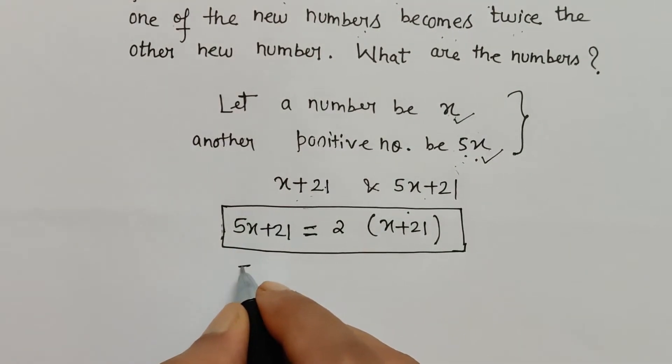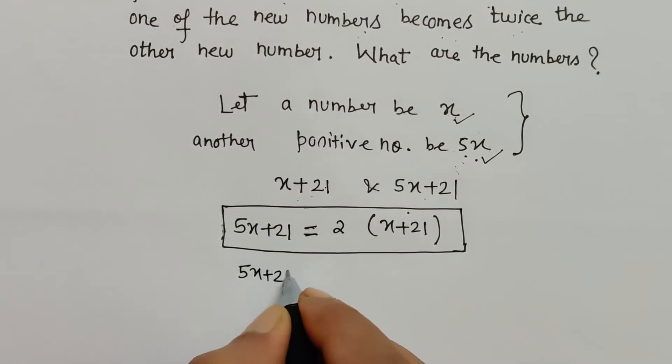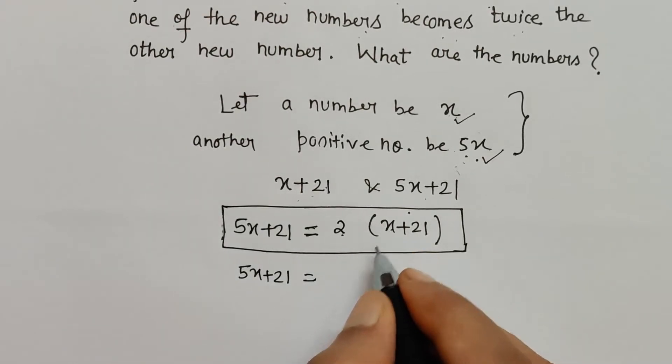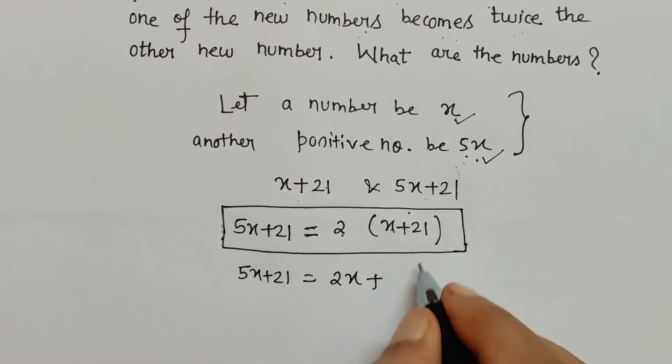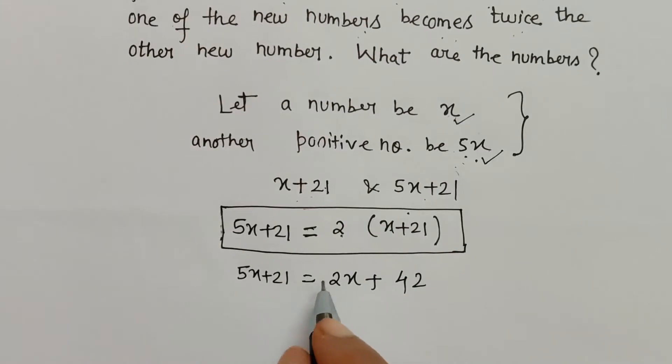What we will do here first we will remove the bracket. So let's write: 5x + 21 = 2 into x is 2x, then this plus sign, 2 into 21 is 2 ones are 2, 2 twos are 4, so 42.